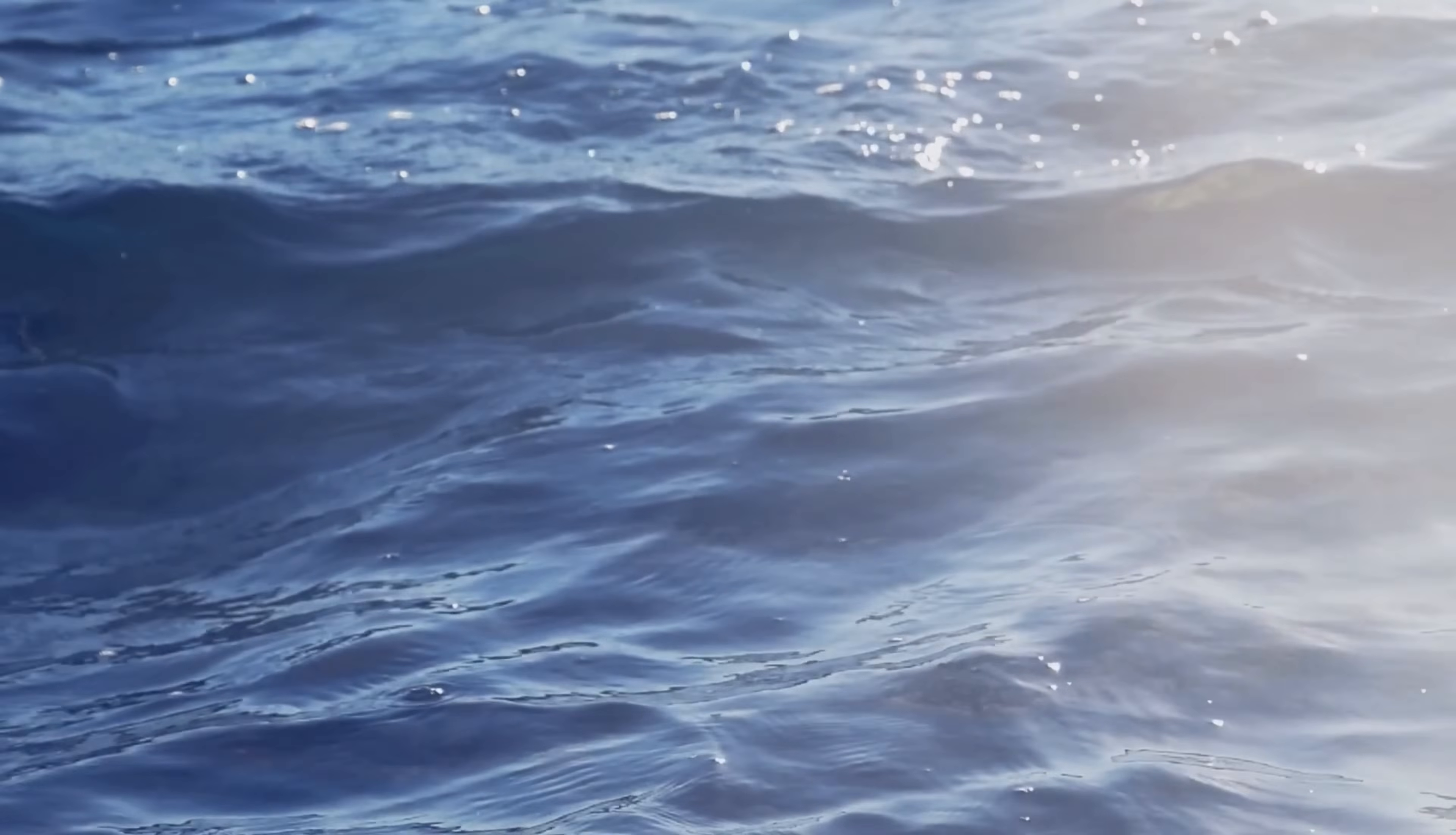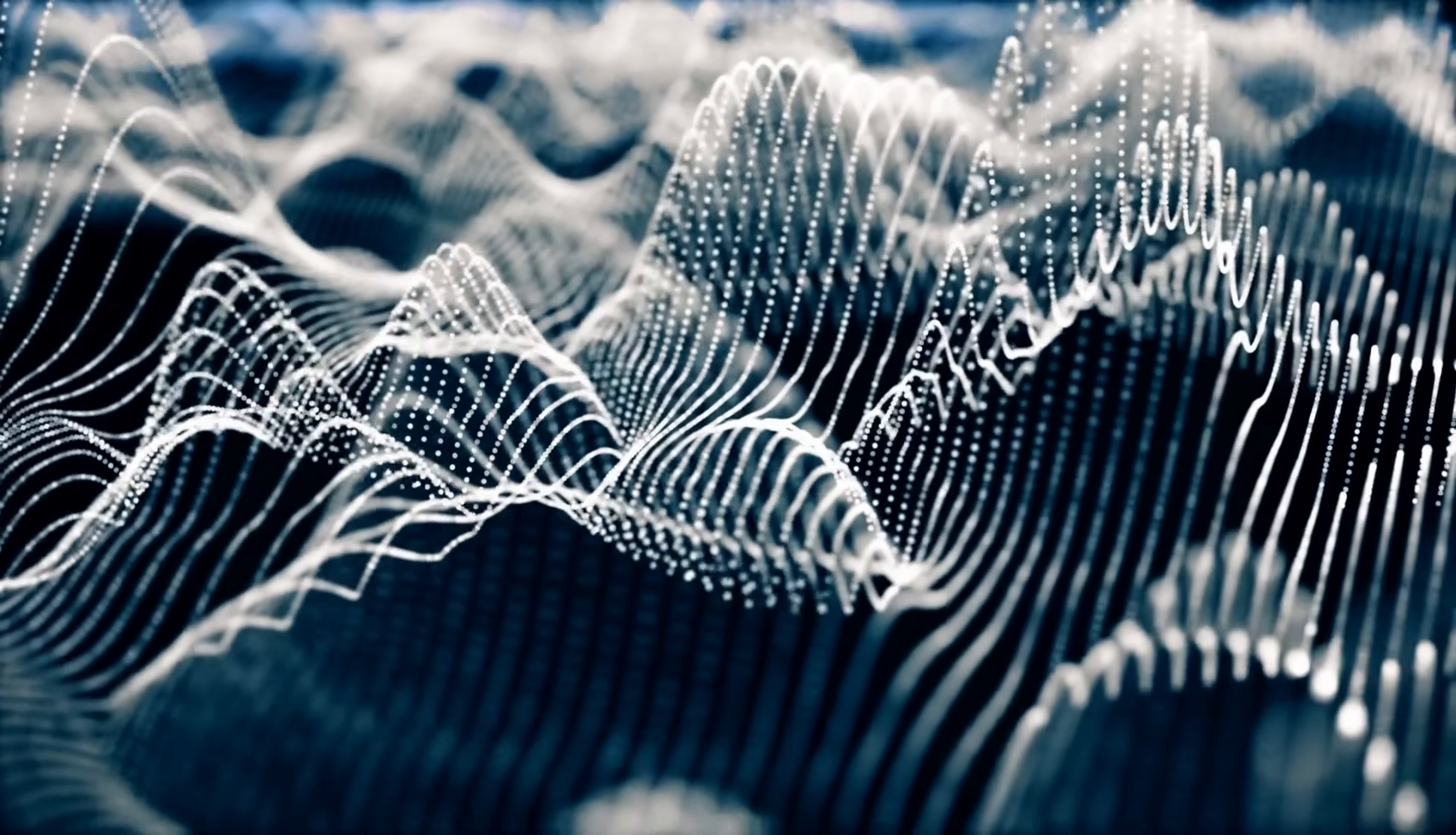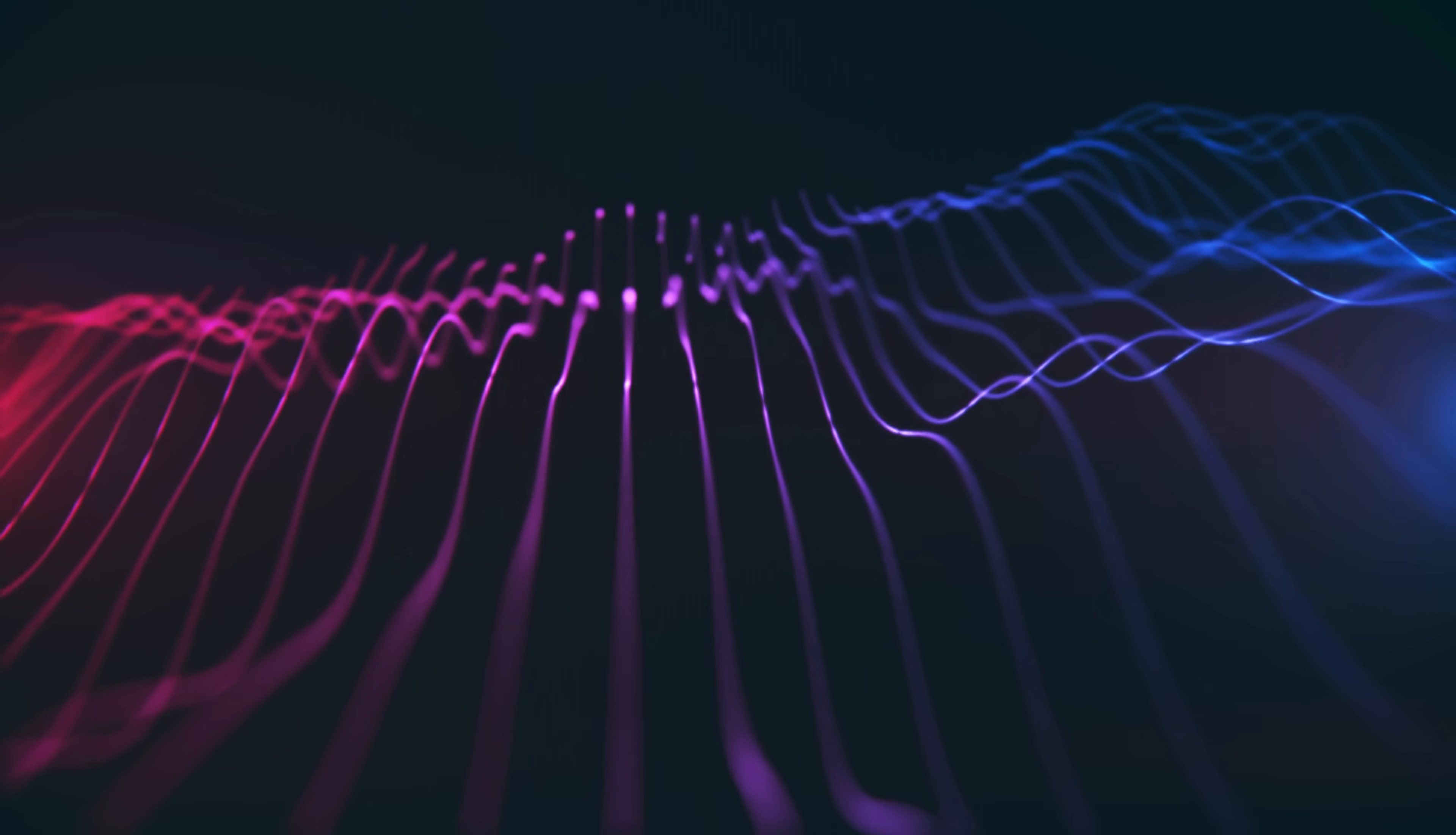Waves are disturbances that travel through a medium, carrying energy without carrying matter. They spread out, interfere, and overlap. Think of ocean waves passing through a narrow gap and forming patterns. Sound waves travel through air by compressing and expanding particles, creating pressure variations that we hear as sound. Light waves, on the other hand, can travel through empty space, oscillating as electromagnetic fields.